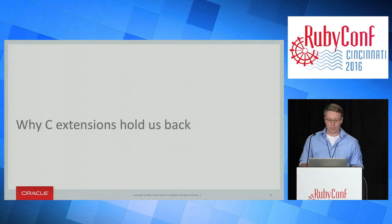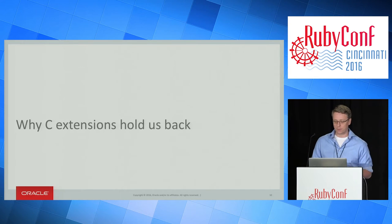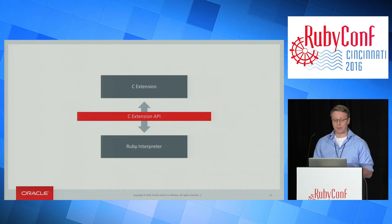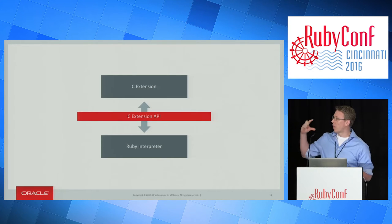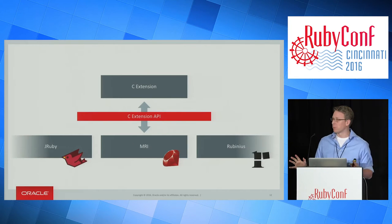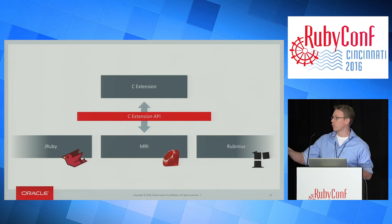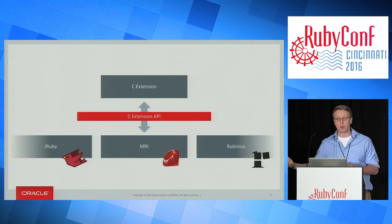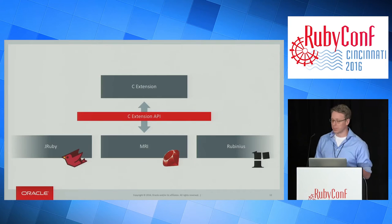But C extensions hold us back. They've been effective so far, but there are some really key problems. This is the model people have in their head: the Ruby interpreter, the C extension API, and then their C extension, with communication going through a proper interface defined in ruby.h. They assume that other implementations can use that API too — that JRuby and Rubinius should be able to just swap out underneath. Rubinius is written in C++, which is similar to C anyway, so it really seems like it should plug in effectively.